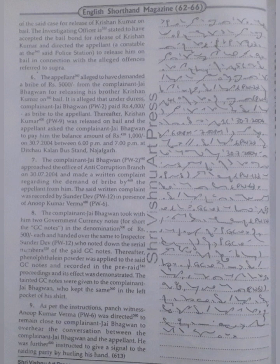The tainted GC notes were given to the complainant Jai Bhagawan who kept the same in the left pocket of his shirt. As per the instructions, Panch witness Anup Kumar Verma (PW6) was directed to remain close to complainant Jai Bhagawan to overhear the conversation between the complainant Jai Bhagawan and the appellant. He was further instructed to give a signal to the raiding party by hurling his hand.